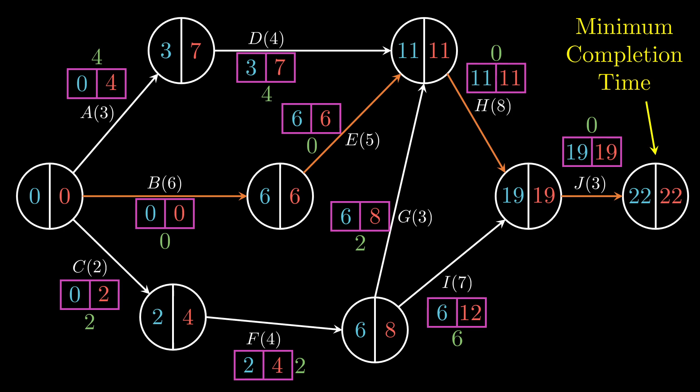So there's always this chain of activities where nobody can afford to wait. There's 0 float time the whole way through, and we call this the critical path.